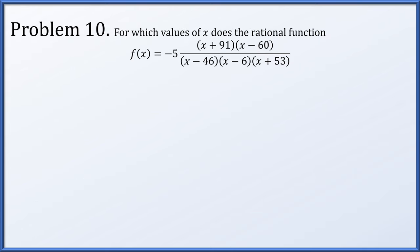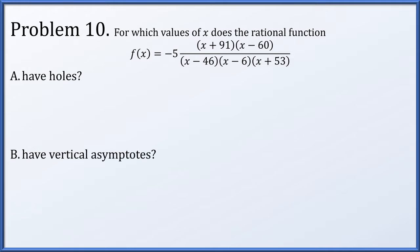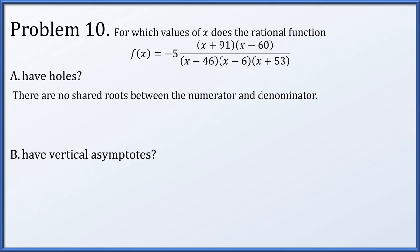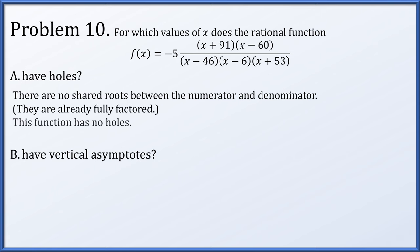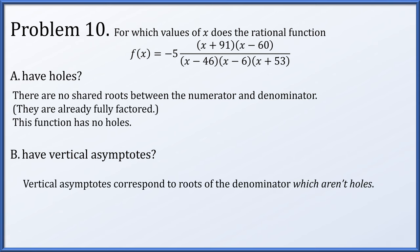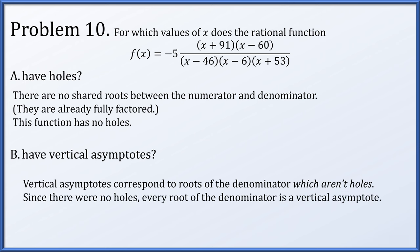In problem 10, we have f of x equals negative 5 times x plus 91 times x minus 60 divided by x minus 46 times x minus 6 times x plus 53. There are no shared roots between numerator and denominator — no identical factors — so the function has no holes. Vertical asymptotes correspond to roots of the denominator that are not holes, so x equals 46, x equals 6, and x equals minus 53 are all vertical asymptotes.